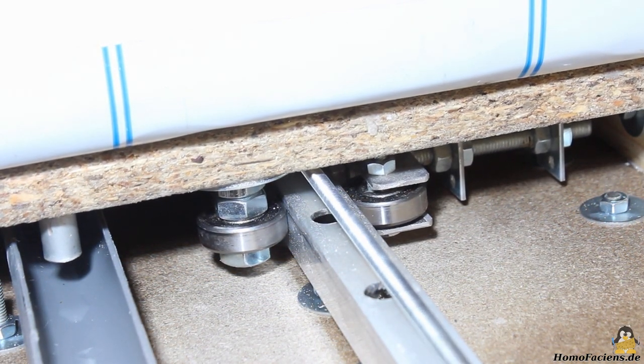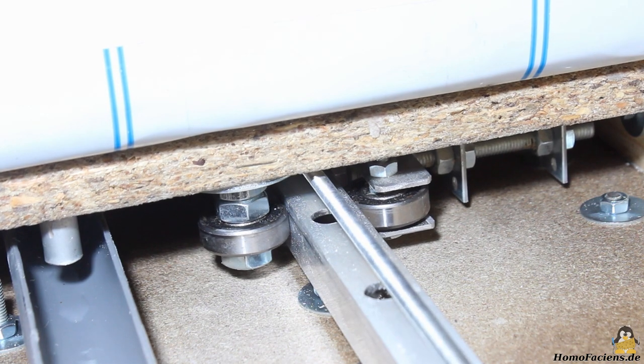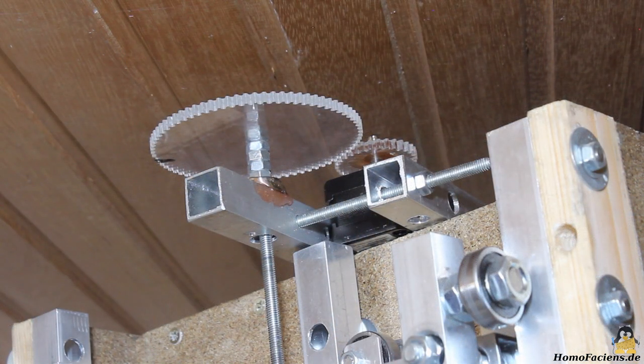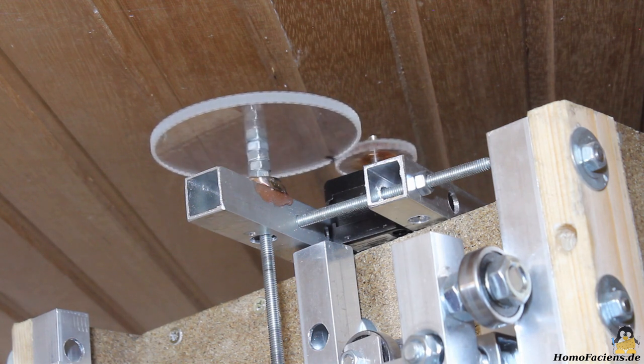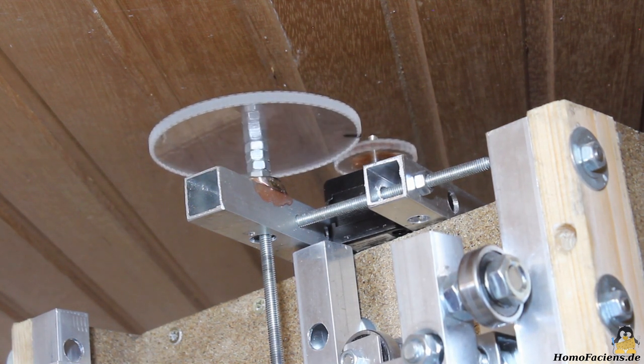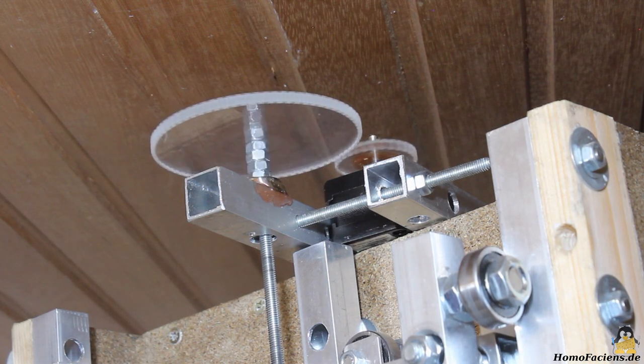The axes are guided along square aluminum bars using standard ball bearings. The stepper motor on top that moves the Z axis has a transmission made of two plastic gears. Those gears were cut with the previous version of this CNC router.